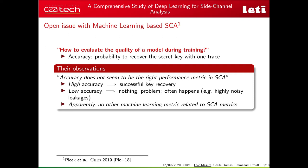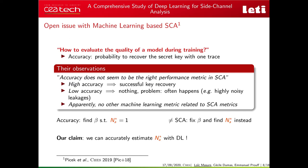Is there any other machine learning metric related to SCA? Picek et al. tried to answer this and apparently not, having tried several metrics in their paper. However, the goal stated previously is somewhat different from computing accuracy. Rather than finding the threshold β such that the minimal number of traces is 1, we want to fix β and find the corresponding number of traces such that the attack succeeds with probability beyond β. Our claim is that we can accurately estimate NA* with deep learning techniques.